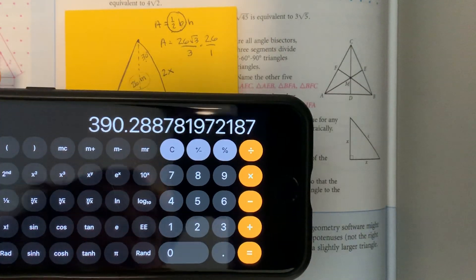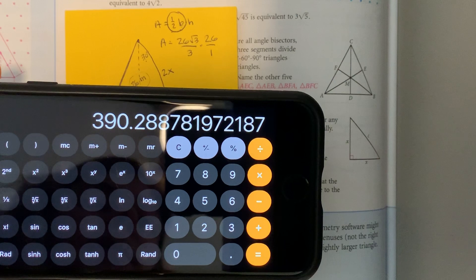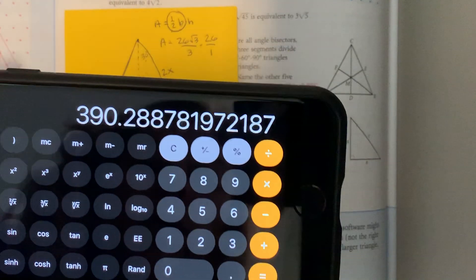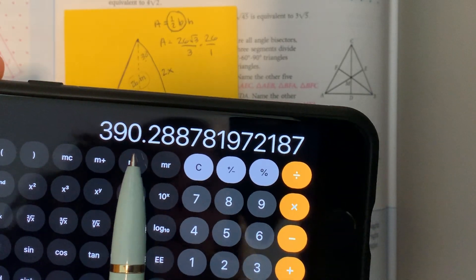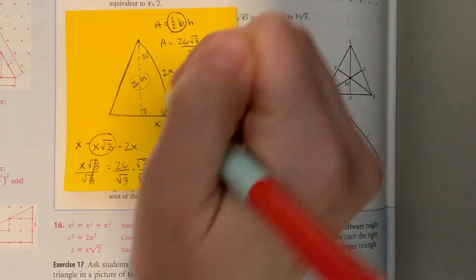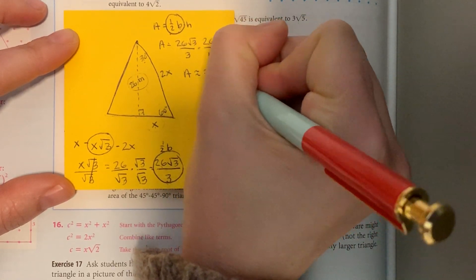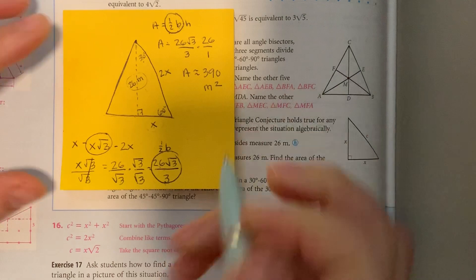We get 390.2. The problem asked to round to the nearest whole square meter, so the 2 tells the 0 to stay the same. Our area is approximately 390 meters squared.